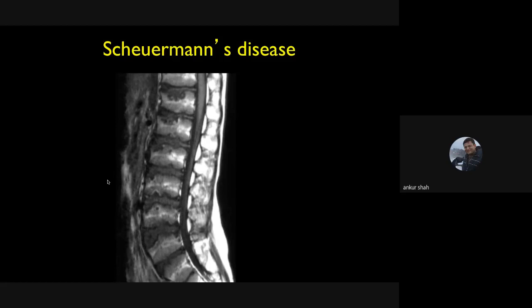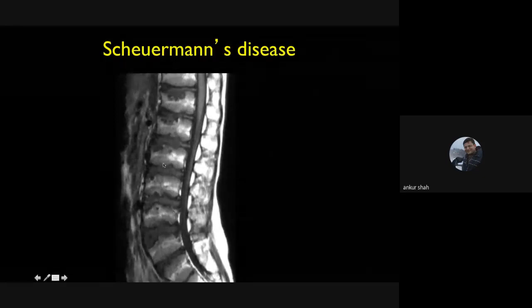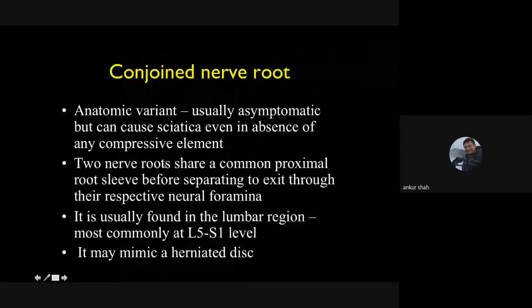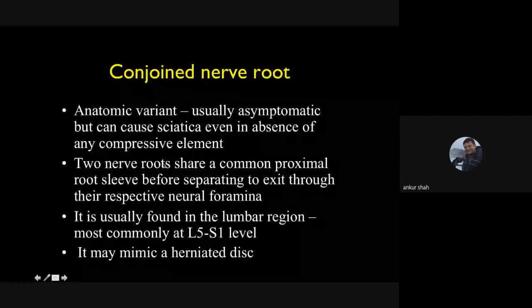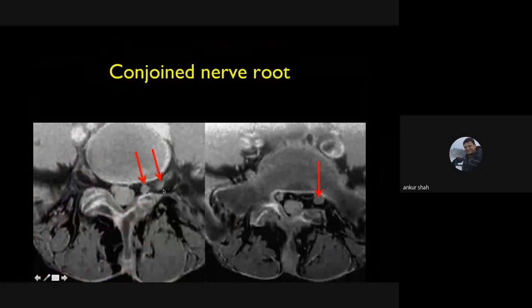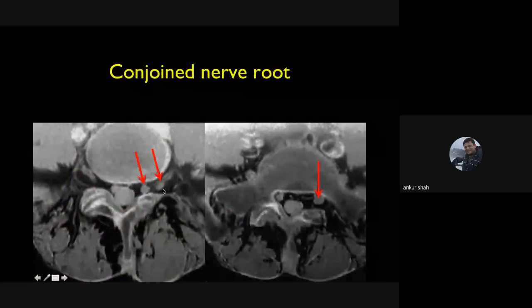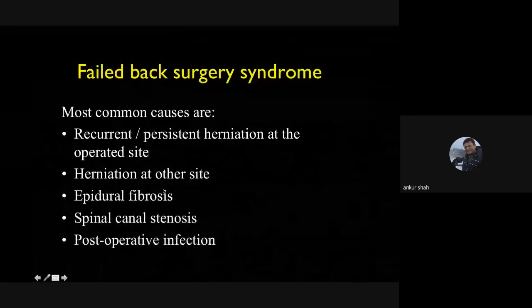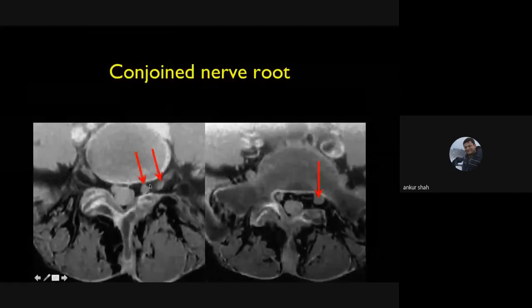Scheuermann's disease is characterized by multiple Schmorl's nodes at multiple levels in the thoracic and lumbar vertebrae, seen in young patients who may present with kyphosis. A conjoint nerve root — where two nerve roots exit from one neural foramen at one level — is an anatomical variant, usually incidental but occasionally causing pain due to mechanical compression.